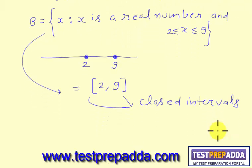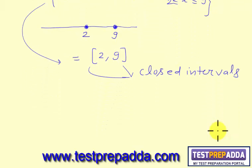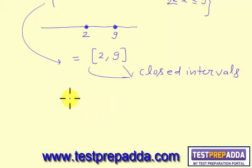This time both 2 and 9 — both numbers — are included. And again, 9 minus 2 is the length of the interval.